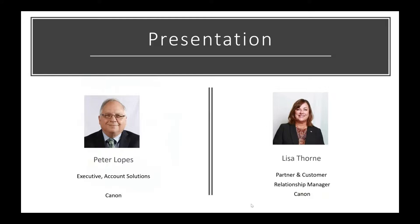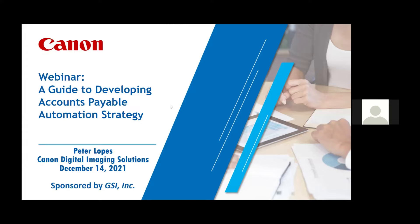I'm going to turn it over now to Peter and Lisa to get into our main presentation. Thank you, Brooke. Welcome, everyone. My name is Peter Lopes. I'm with Canon Digital Imaging Solutions, a division of Canon USA. I want to thank each of you for joining this GSI-sponsored webinar entitled The Guide to Developing an Accounts Payable Automation Strategy.